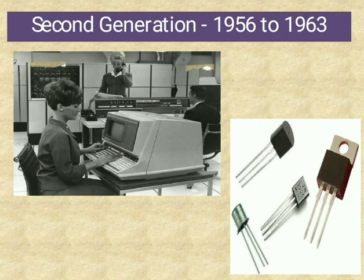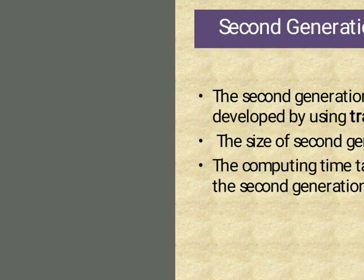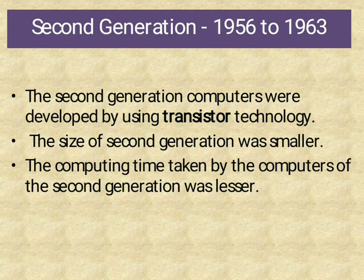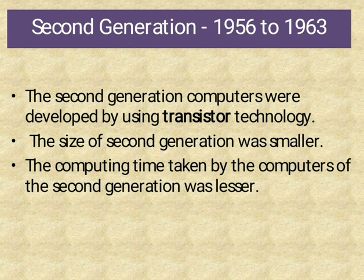2nd Generation, 1956–1963 — transistors are used. The 2nd generation of computer was developed using transistor technology. The size of the computer was smaller and the computing time taken by the computer was lesser.